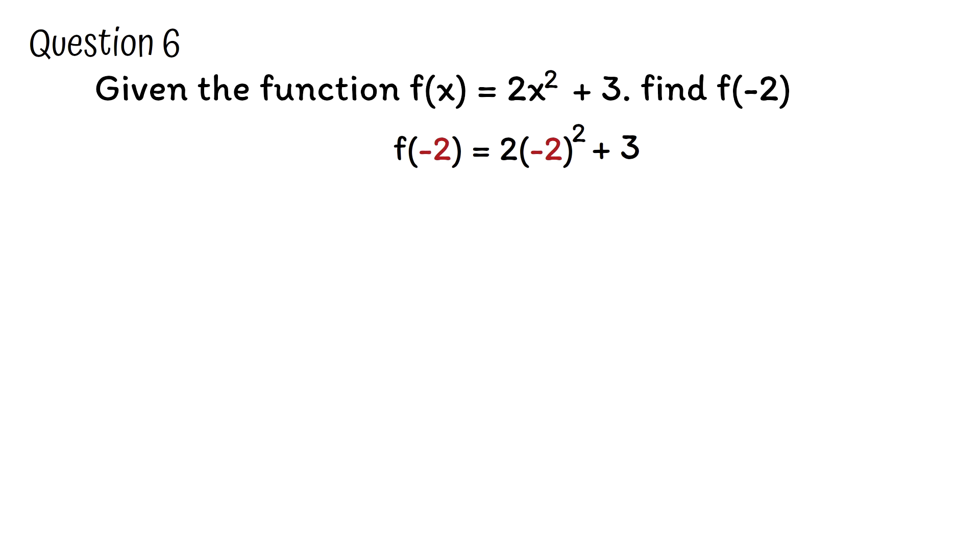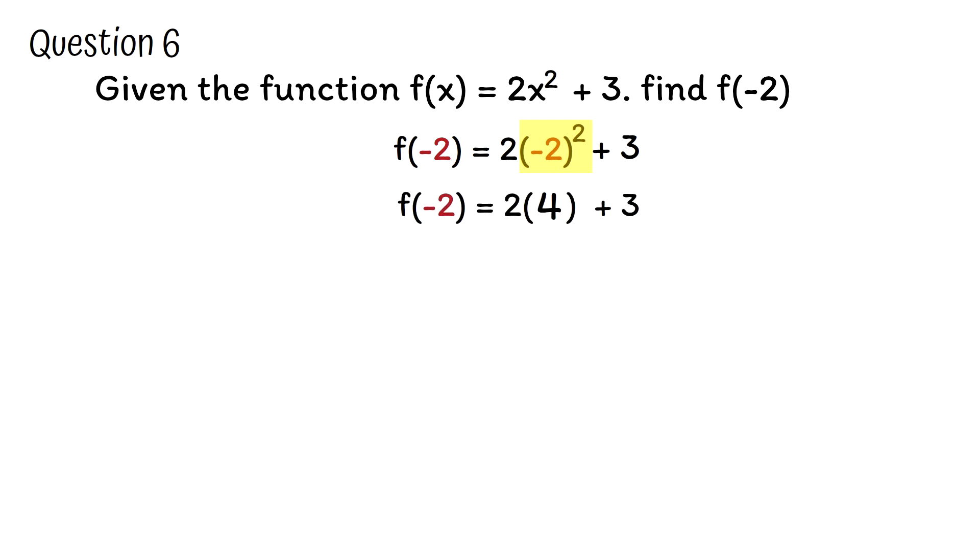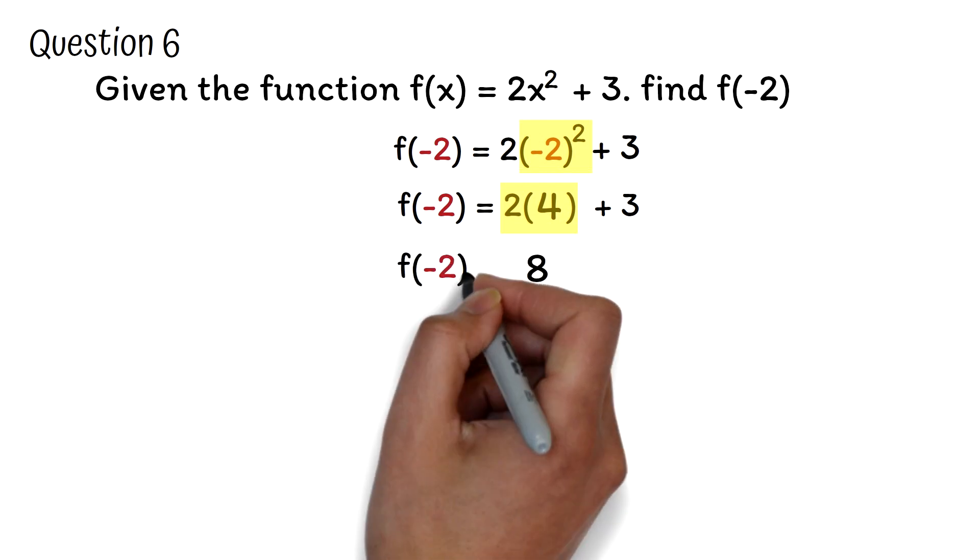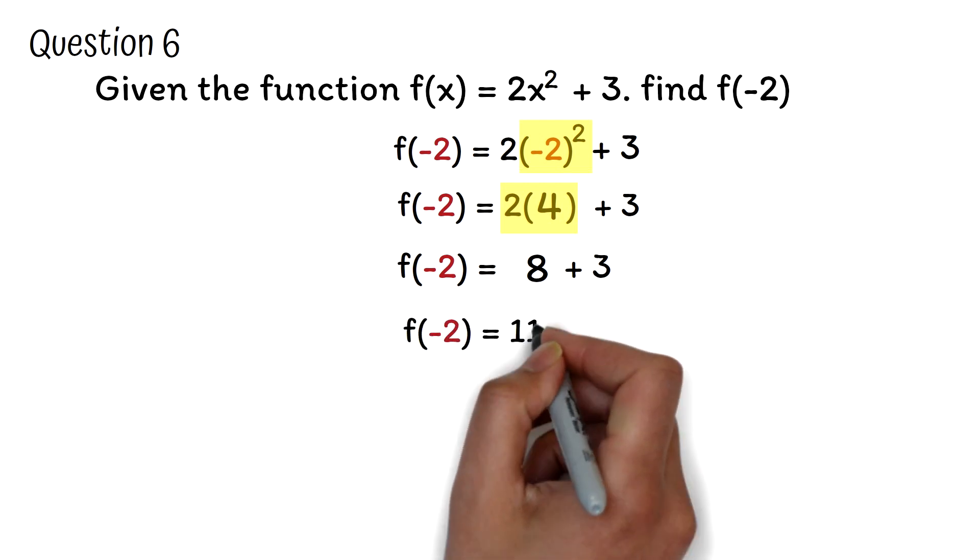Now we will use the order of operations to get the answer. If you're not familiar with the order of operations, please check the links below this video and watch it. From the order of operations, we will have to do the -2 squared first. -2 squared is 4. Next, from the order of operations, we will do the multiplication by 2. 2 times 4 is 8. So we have f(-2) = 8 + 3. Then finally, we will add 8 to 3. This will give 11 as our answer.